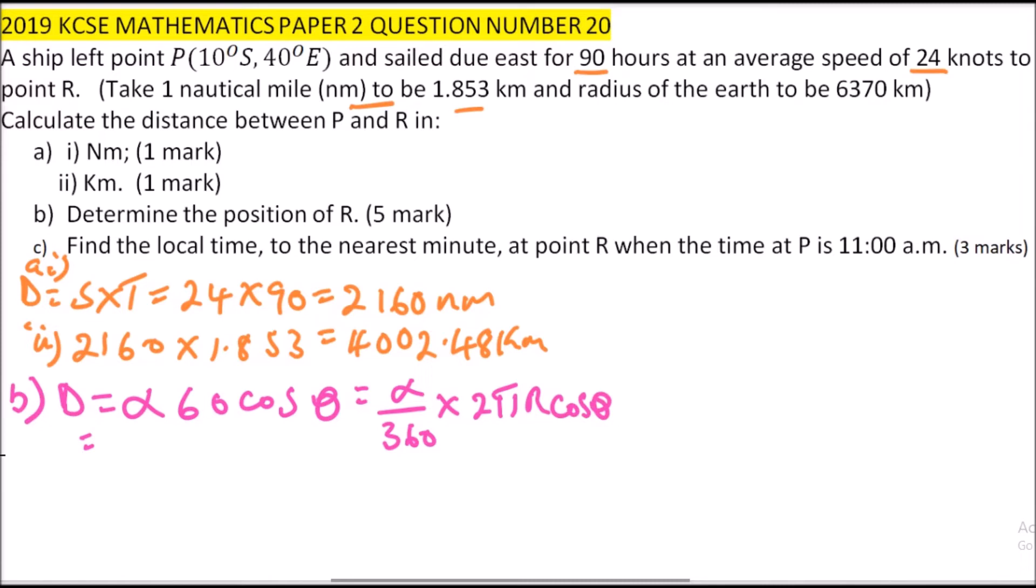So this will give us, this means that 2,160 equals alpha multiplied by 60, 60 degrees, the cosine of 10. And this, you say alpha equals 21, that is 2,160, all this is divided by cos 60, cos 10 degrees. So when you work out that, you get it is 36.6 degrees.